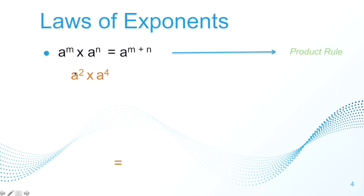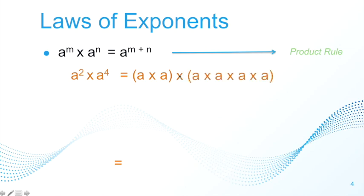Let's take a look at this specific example: a squared times a to the power of 4. Using the definition of exponents, a squared means you multiply a twice, and a to the power of 4 means you multiply a by itself 4 times. Combining this and writing it in shorthand, this will be equal to a to the power of 6, and 6 came from adding 2 and 4.